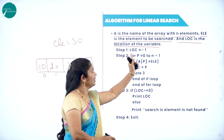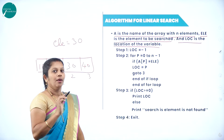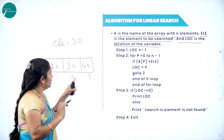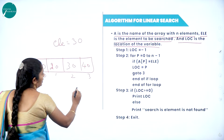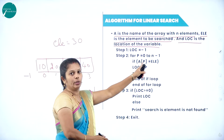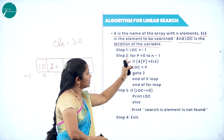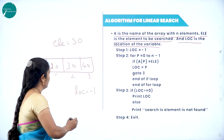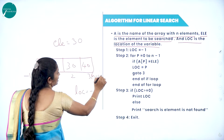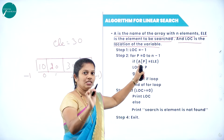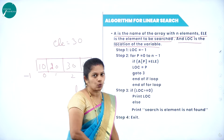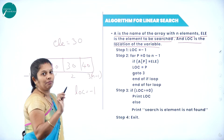Step 1: Set LOC = -1. Before processing, we initialize location to -1. Step 2: Start processing for P = 0 to N minus 1. The position starts from 0 to N minus 1. In the first case, we assume position P = 0, representing the first element. A of P, that is A of 0, represents the value 10 here.